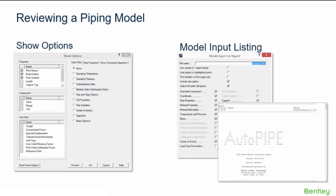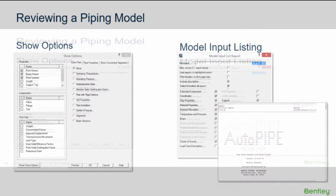The model input listing allows you to select the report options and the sub-reports that you want to view, and it will create an ASC2 text report file with that information.